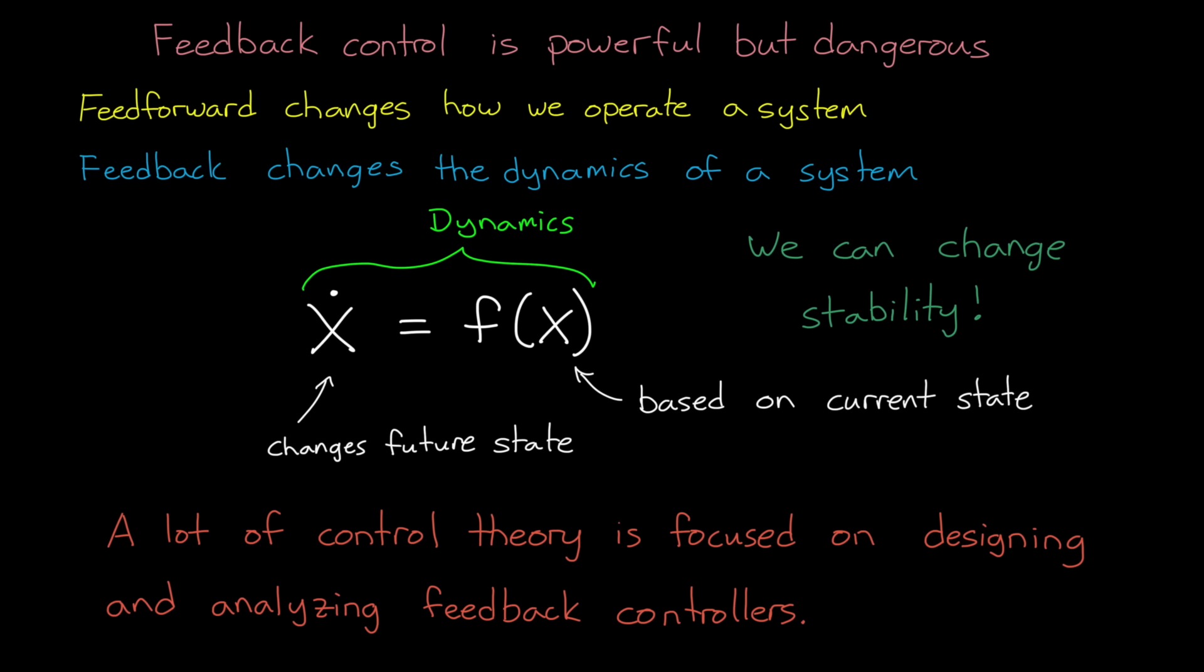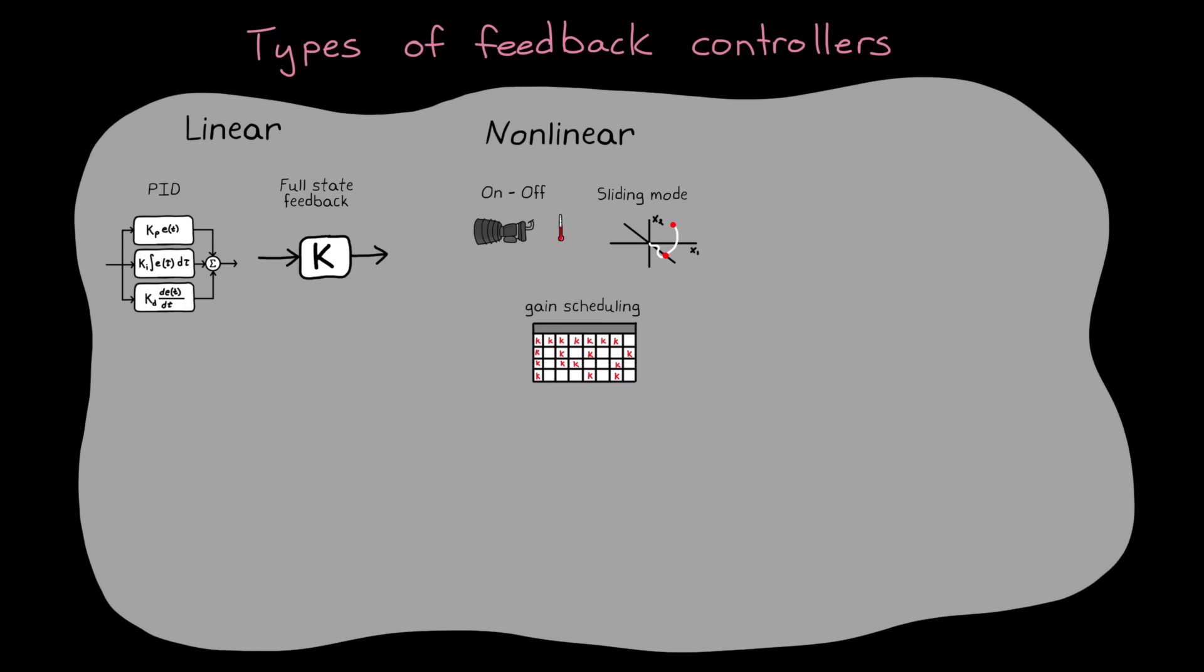And since feedback control exists in many different types of systems, the control community over the years have developed many different types of feedback controllers. There are linear controllers like PID and full state feedback that assume the general behavior of the system being controlled is linear in nature. And if that's not the case, there are non-linear controllers, like on-off controllers and sliding mode controllers and gain scheduling.